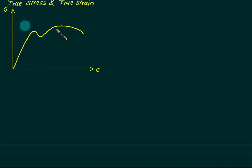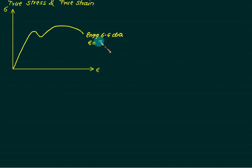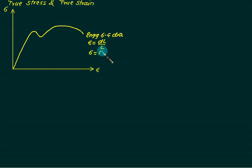This is a stress-strain diagram, where we are plotting stress and strength. This is called the conventional stress diagram or engineering stress-strain diagram. True strain is defined as change in length upon original length — that is final length minus initial length divided by original length. Stress is defined as force upon original area.